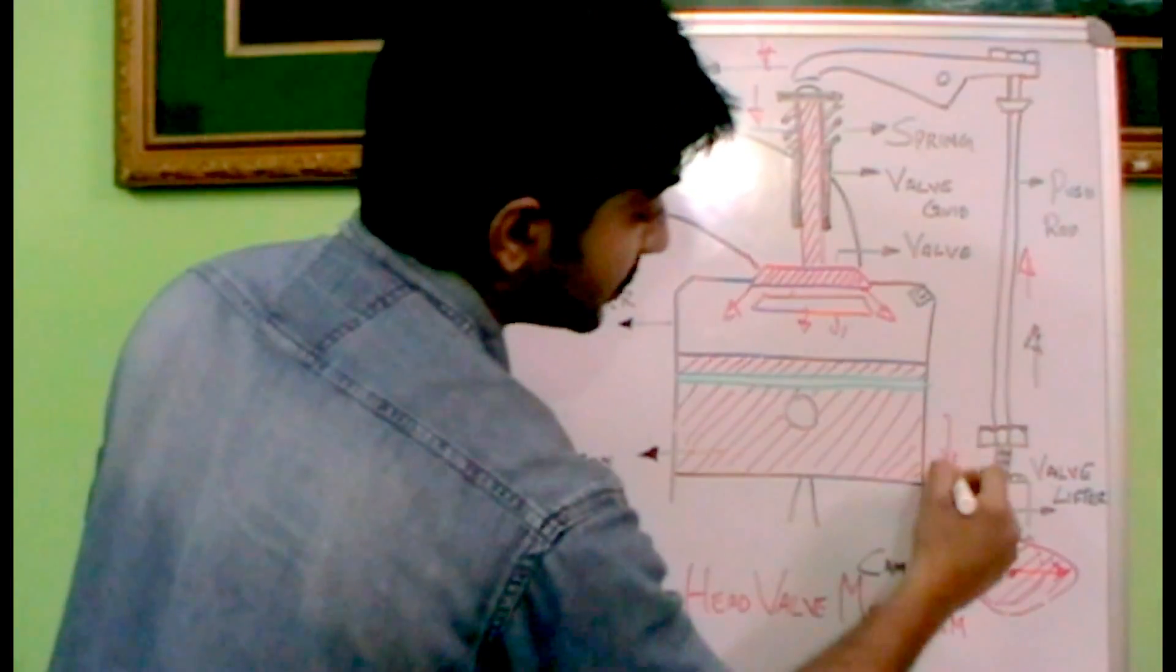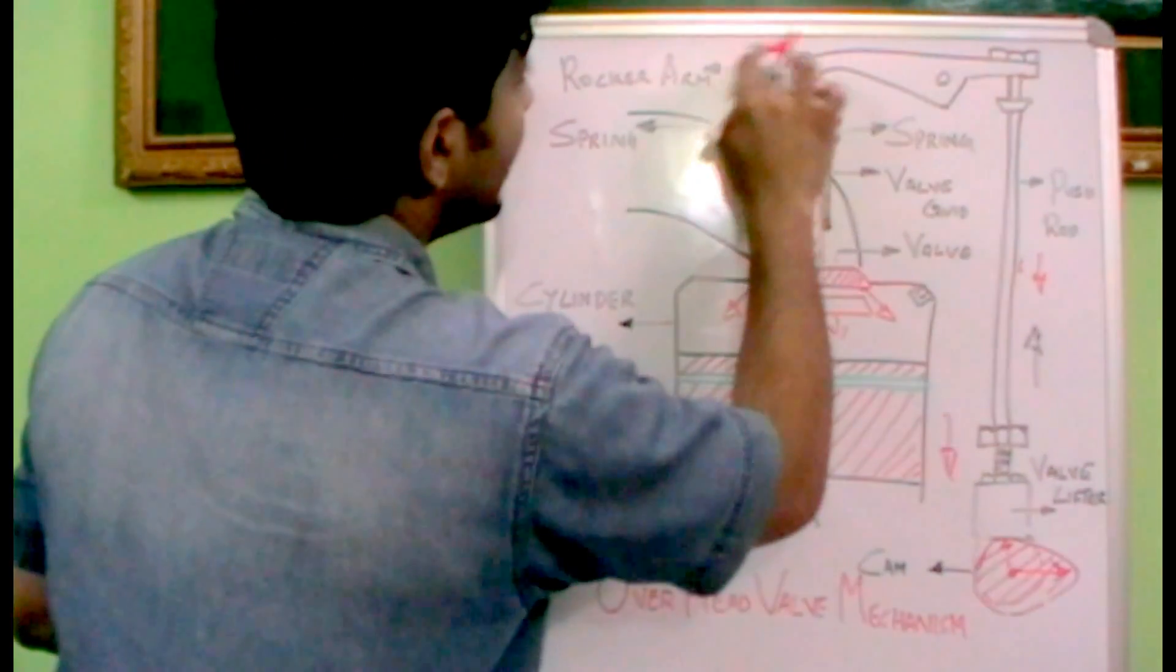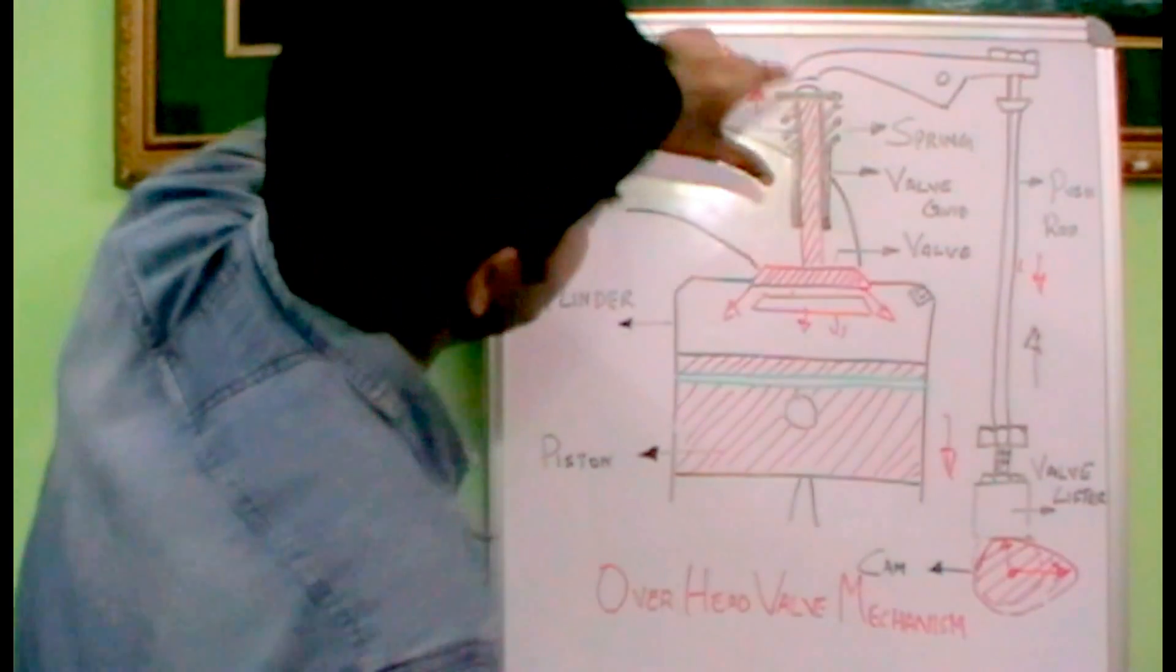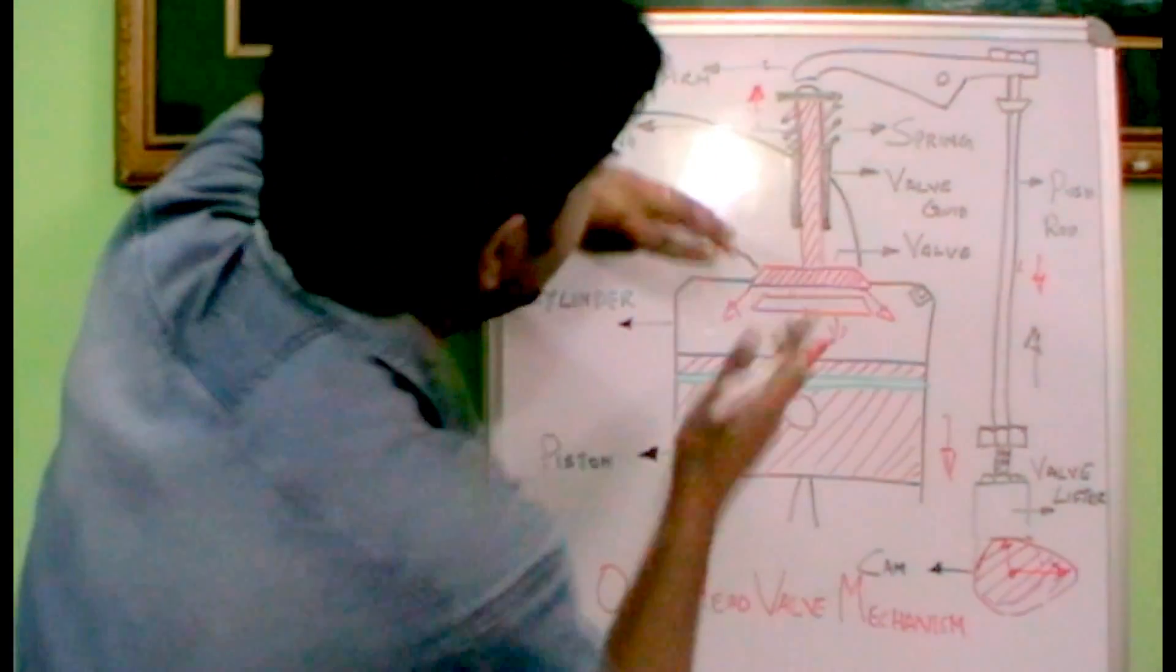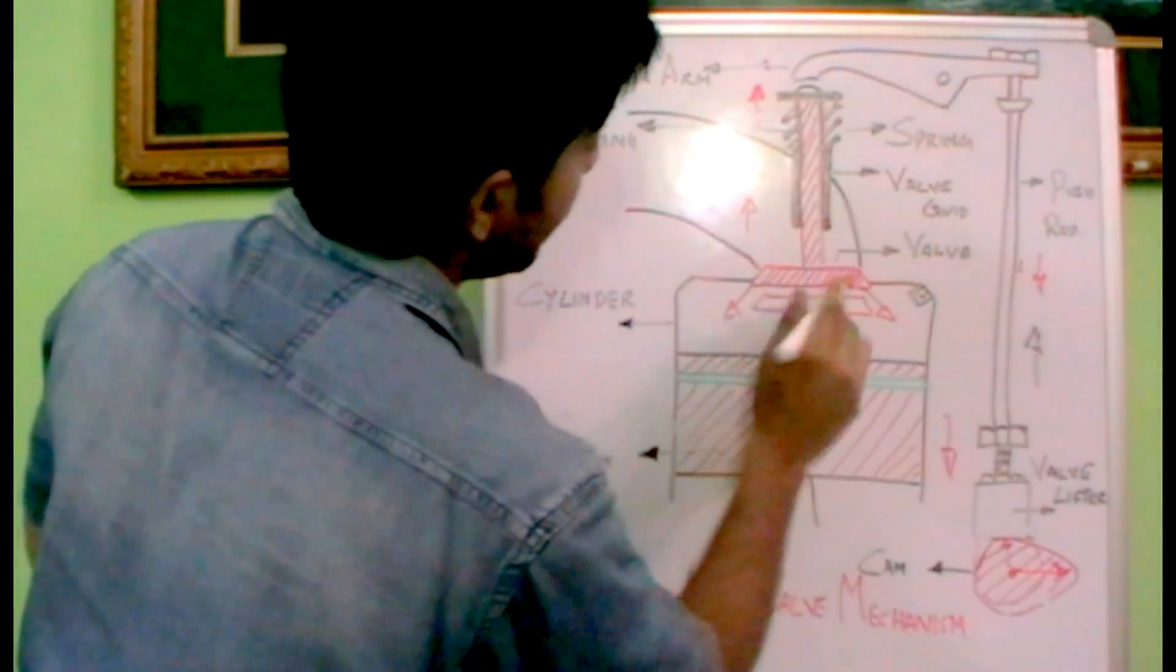The valve lifter moves down. That means the push rod moves down. And the rocker arm moves up. So normally due to the spring tension, it is compressed while it moves down. Because of the spring tension, it retains its original position. That means the valve moves up and it closes.